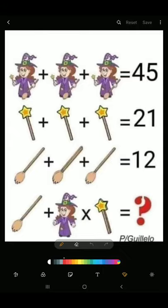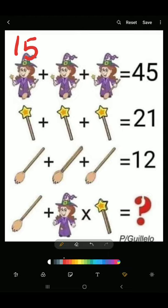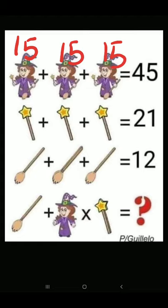So the wizard or the witch, or whatever you want to call her, is worth 15. So it's 15 plus 15 plus 15 equals 45.